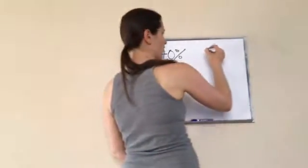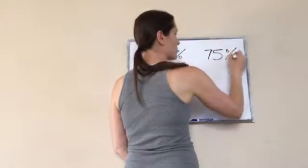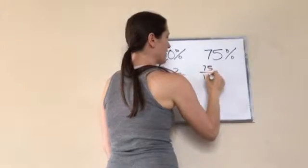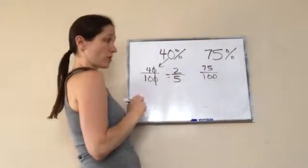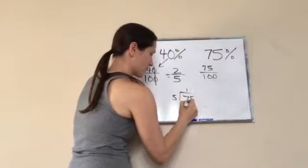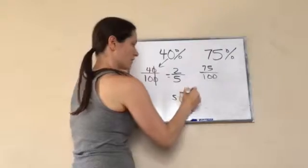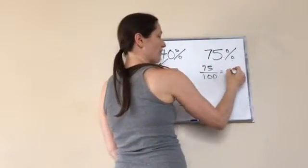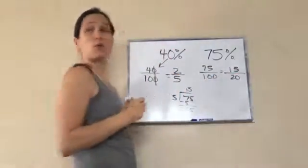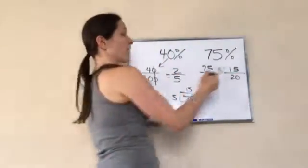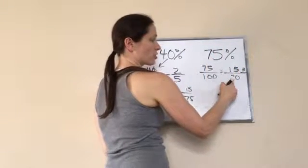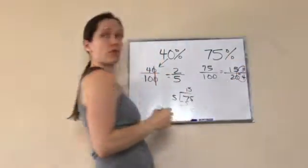Okay, let's do one more of those to make sure you're confident. Let's do 75%. What does that look like? 75 over 100. Very good. And then how do I reduce that? By 5. 5 will go into 75 fifteen times. 5 will go into 100 twenty times. And that will still reduce. 5 will go into 15 three times, and 5 will go into 20 four times. Final answer, 3 fourths.